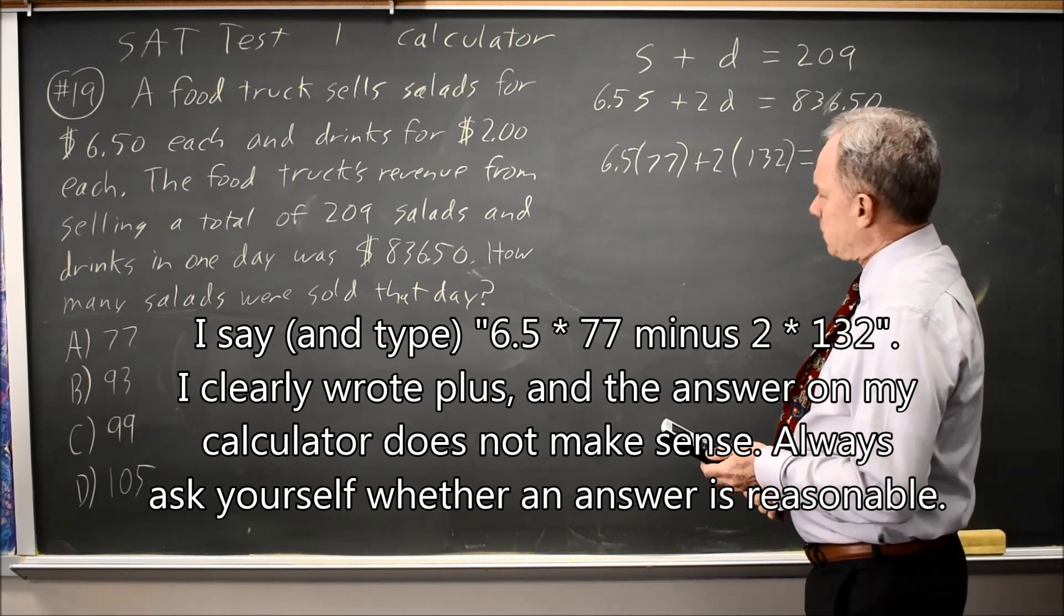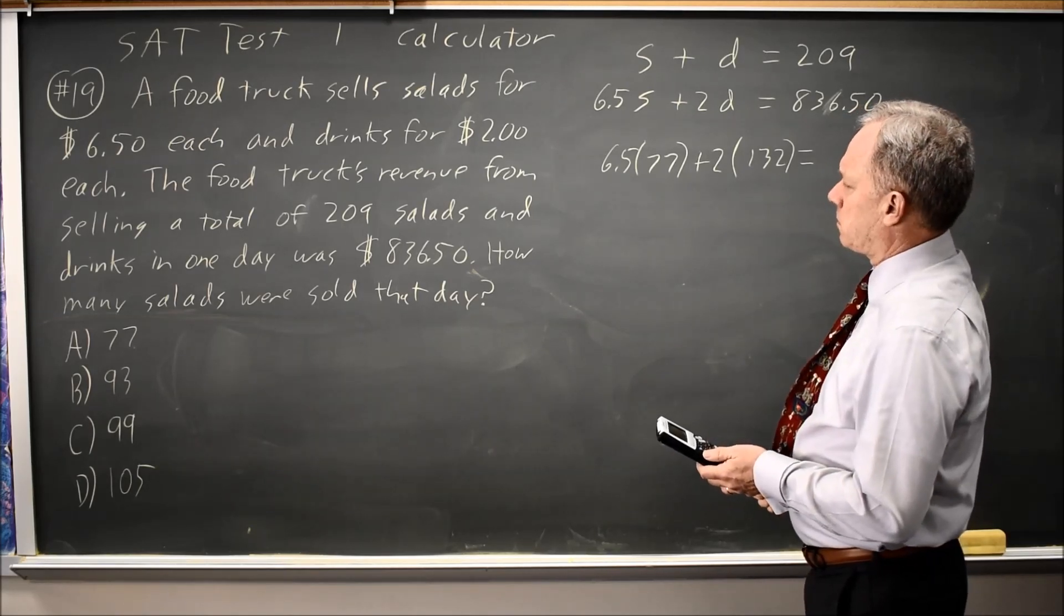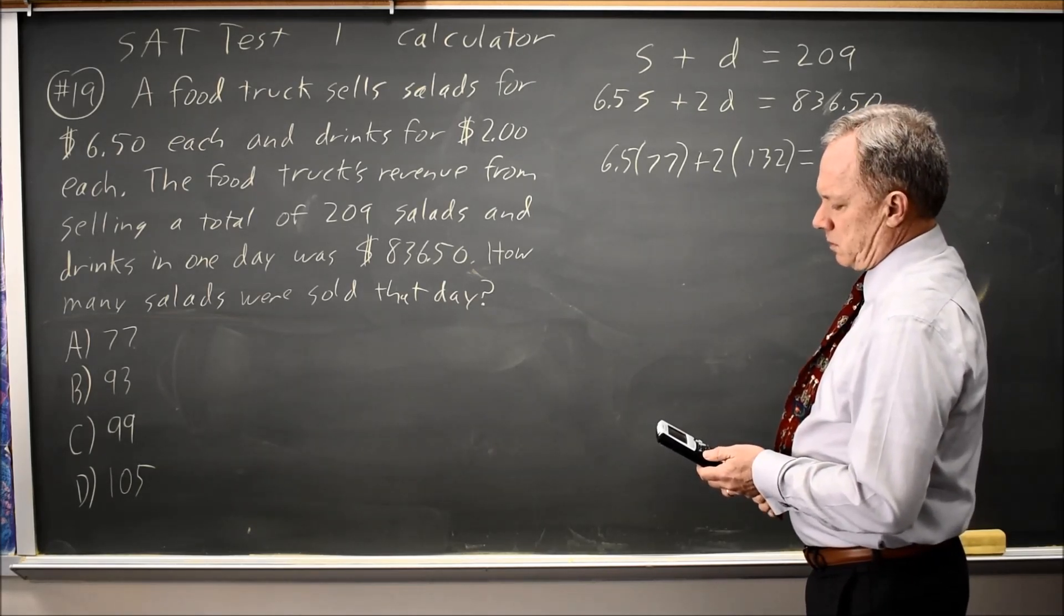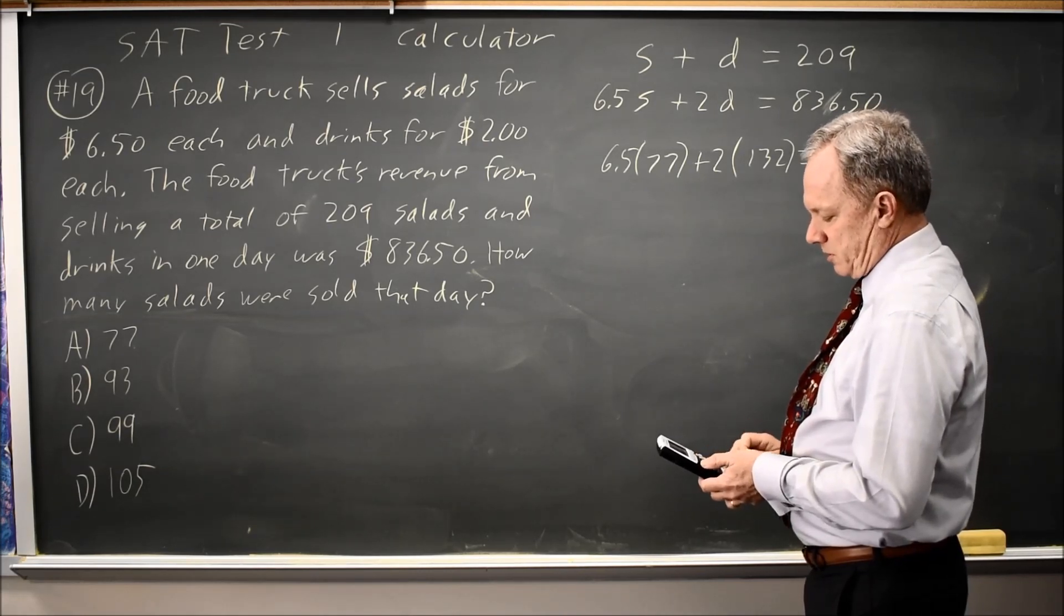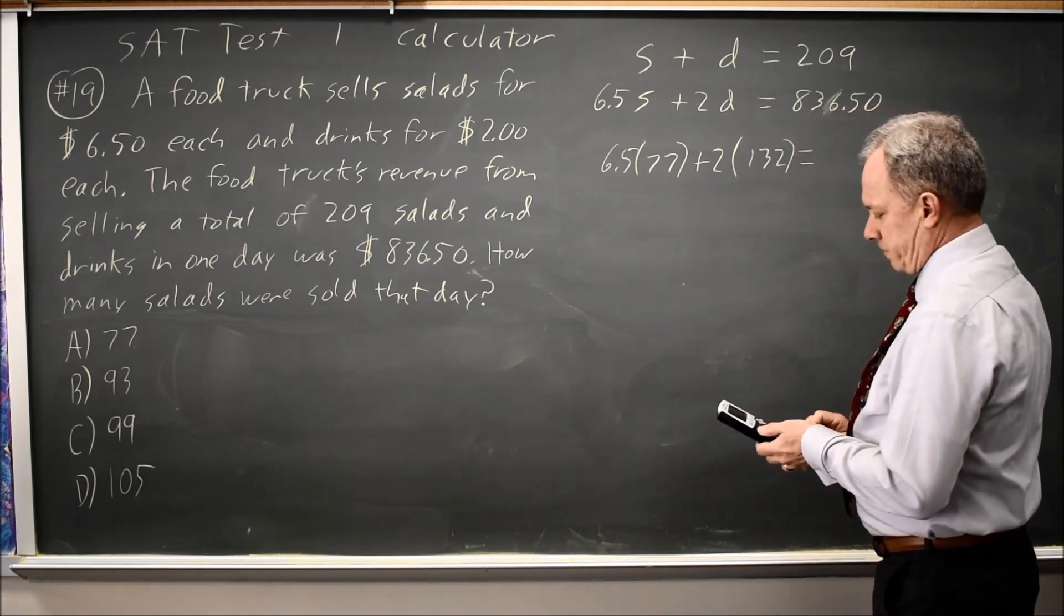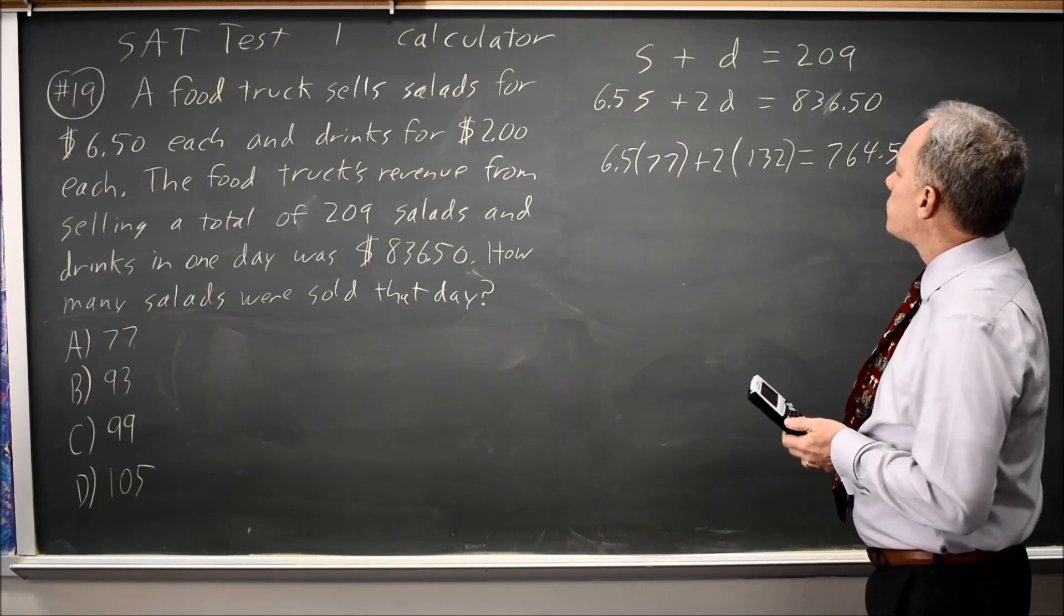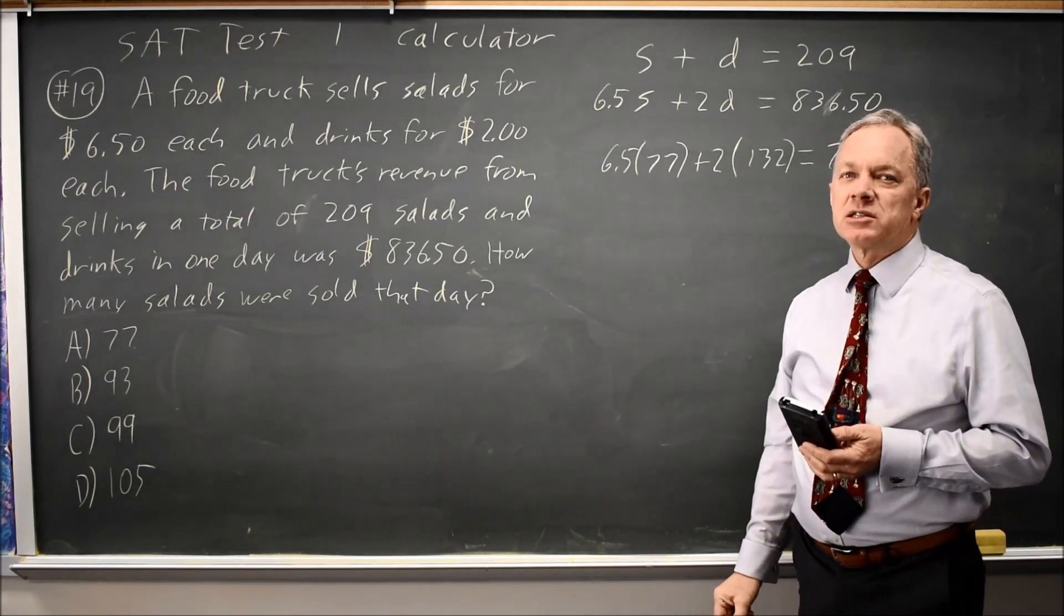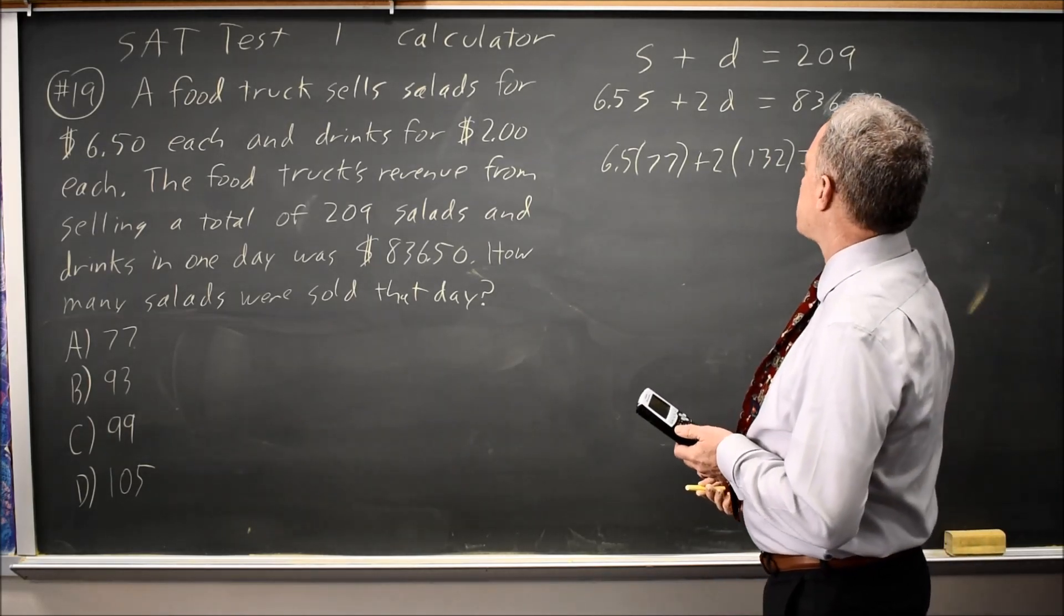Oh, I'm sorry. Plus 2 times 132. I wrote plus, and I typed the wrong thing. That gives 764.50. It's important to pay attention so that you recognize when you've done something careless and the answer doesn't make sense.